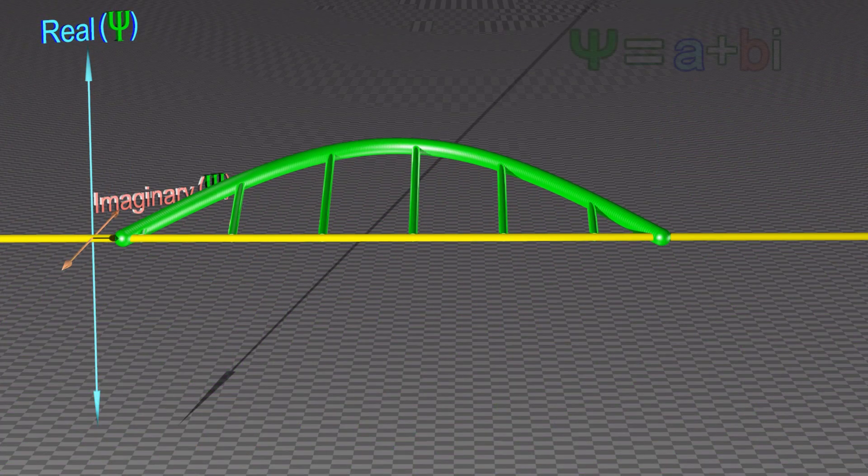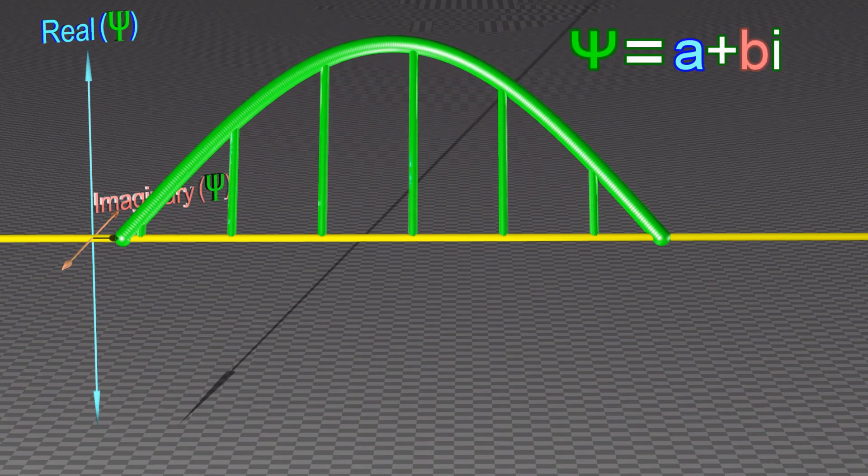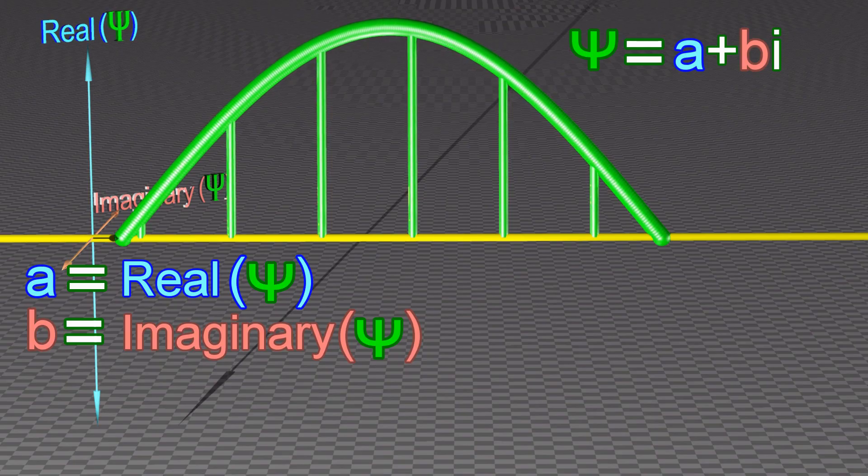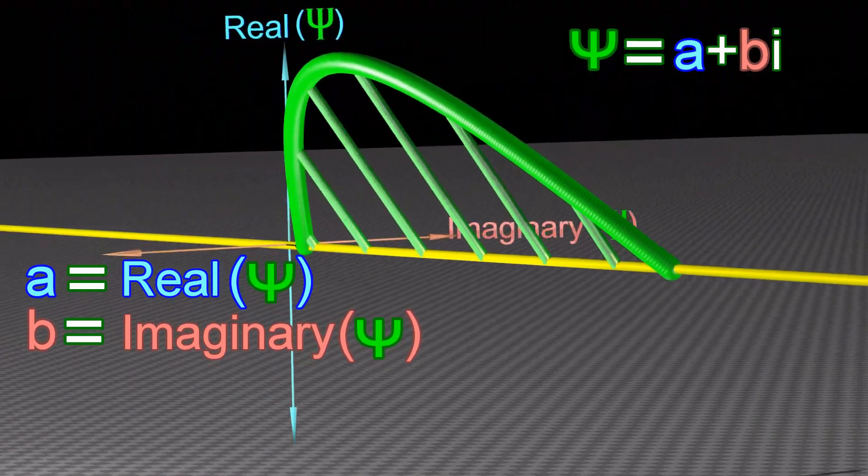At each point in space and time, all wave functions are described by a complex number. All complex numbers have a real component and an imaginary component.